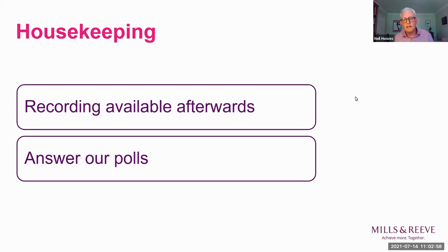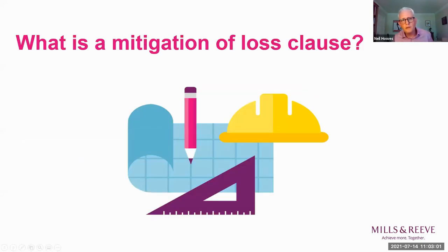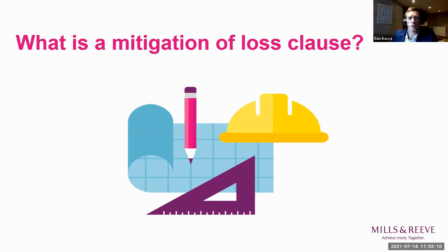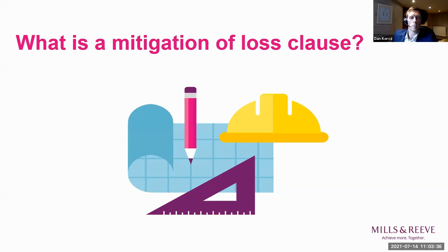So let's make a start and talk about mitigation of loss clauses — what are they, what do they mean? Mitigation of loss clauses are frequently found in insurance policies for contractors. They're in place to prematurely deal with issues that, if left, would otherwise turn into a claim. The reasoning is that getting in early and fixing the problem on live construction projects is better than leaving issues to be discovered later, where the remedy might be more costly. The client is more likely to want the issue fixed by way of remedial works than to be compensated for loss in value of the land or property.